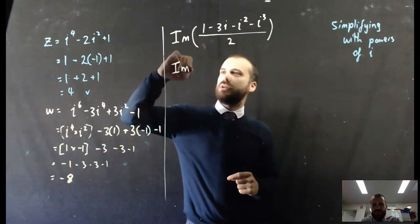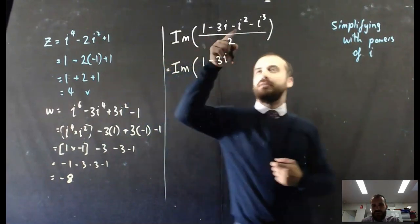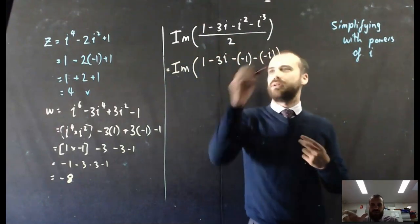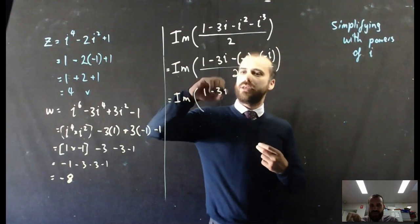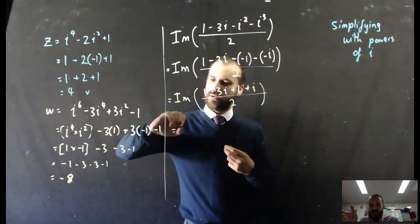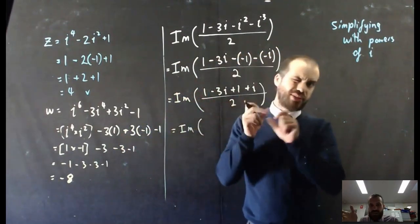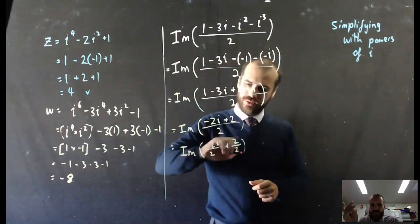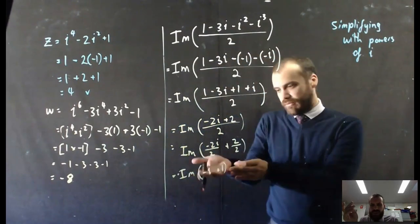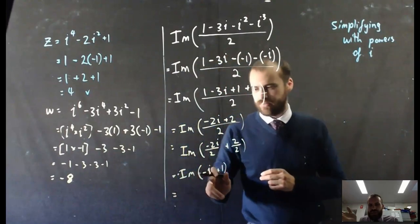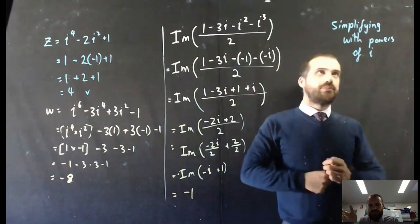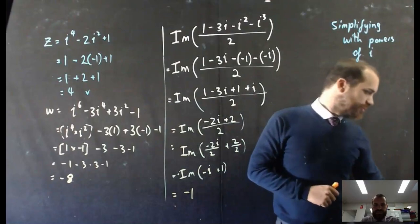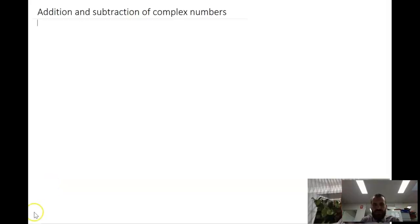This is combining two ideas — the imaginary component of a real number, and then simplifying using powers of i, and then finding what the imaginary component is. When we go through all of this, we get 2 minus 2i. The i should really come after the real number.